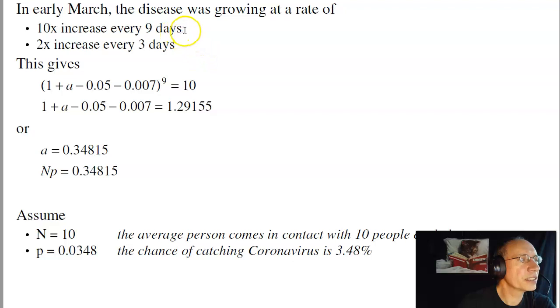Initially, the disease is spreading, increasing by tenfold every nine days, or doubling every three days. What that means is this growth rate: in nine days, it goes up by 10 times. In three days, it goes up by two times. With that, I can solve for A. A is about 0.34, meaning n times p is 0.34.